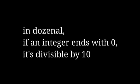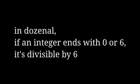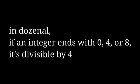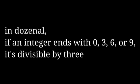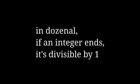Check it out: if an integer ends with 0, it's divisible by 12. If it ends with 0 or 6, it's divisible by 6. If it ends with 0, 4, or 8, it's divisible by 4. If it ends with 0, 3, 6, or 9, it's divisible by 3. If it ends with 0, 2, 4, 6, 8, or 10, it's divisible by 2, and if it ends, it's divisible by 1.